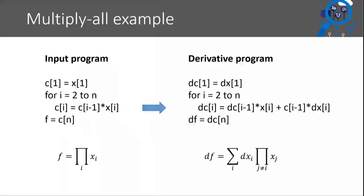To illustrate what happens with programs: I've written down a program for multiplying an array of numbers - it multiplies x1 to xn using an accumulator array ci, which is the product of all x's up to i. You can convert this program to get a derivative program that computes the formula for the derivative, but does it in the same size program and roughly the same amount of work. It does not blow up quadratically the way the formula did, and that's generally true for derivatives.